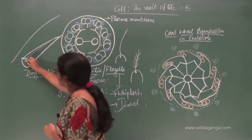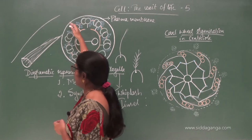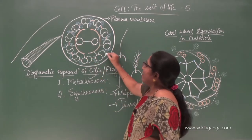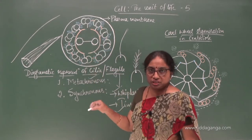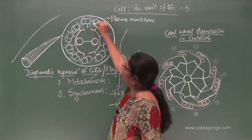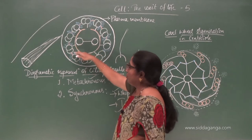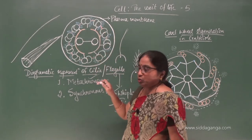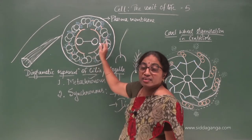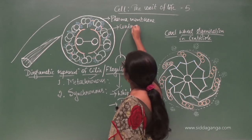They run parallel to each other along the axis of the flagellum or cilia. In the peripheral region you can see nine doublets of microtubules — these are cytoskeletal structures. The entire structure is called the axoneme. In the axoneme, you can see nine peripheral doublets of microtubules. In the center, there are two more microtubules interconnected with the help of a bridge, and these central microtubules are enclosed by a central sheath.